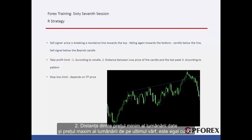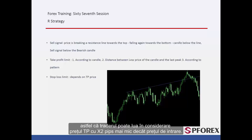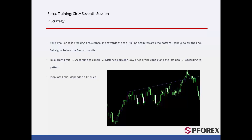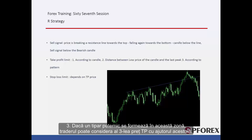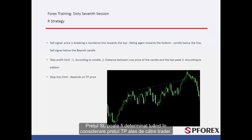Second, the distance between the low price of the given candle and the high price of the candle on the last peak equals X2; thus a trader can consider TP price X2 pips lower than the entry price. Third, if a powerful pattern forms in this region, a trader can consider the third TP price via this pattern. SL price can be determined considering the TP price that the trader selects.